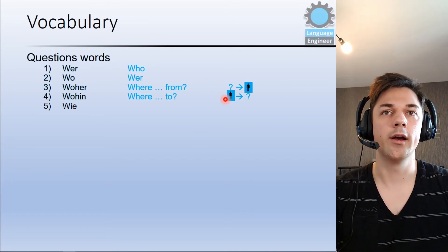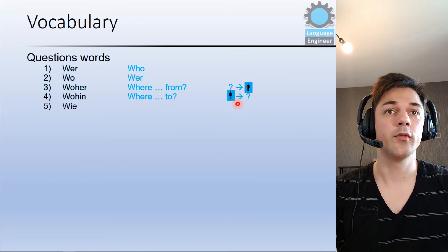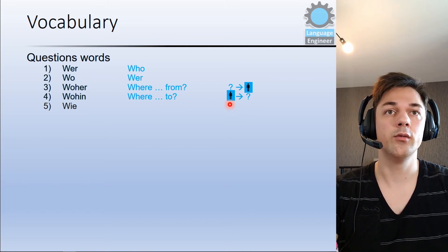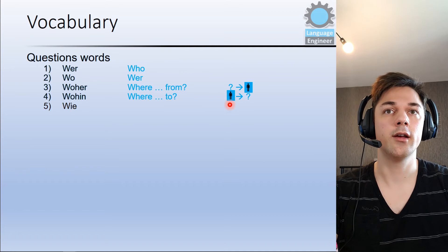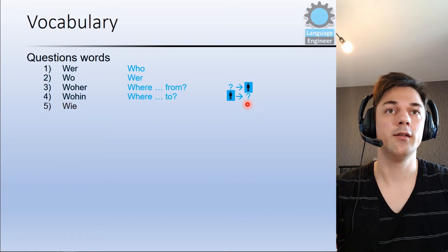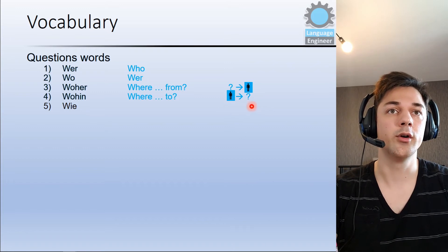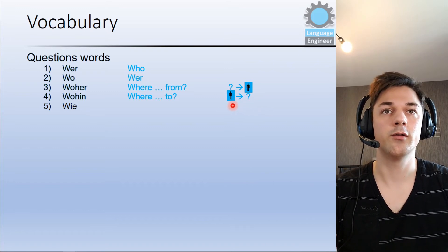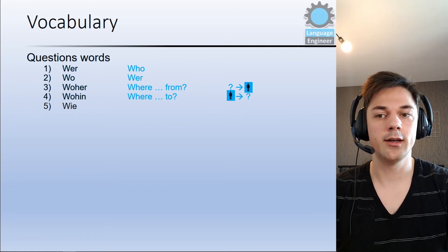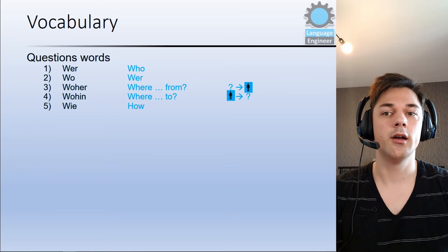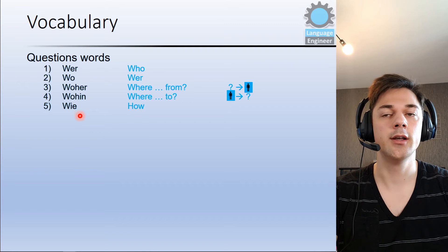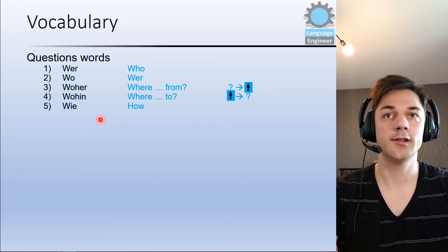Then the next one is where to. So for example, you are going to a place, you are going to Germany. Then you can say wohin gehst du. So that's why I made here a question mark because you are going somewhere. And if you want to ask the question for that, then you use wohin. The next one is wie and the translation is how. And we use wie for example for the question wie heißt du, what's your name?